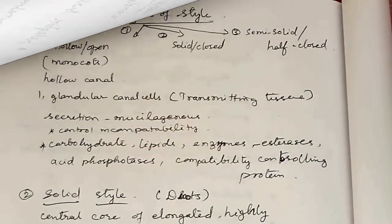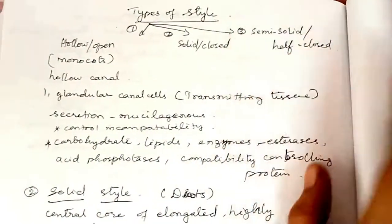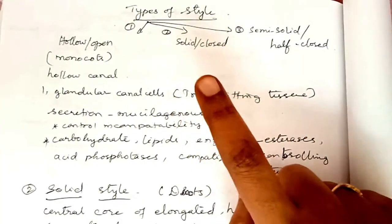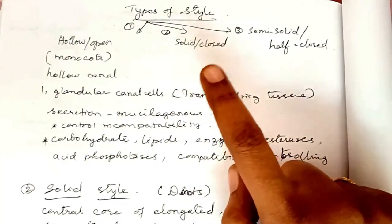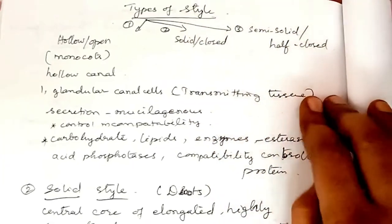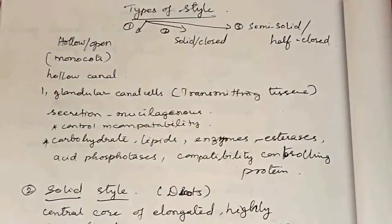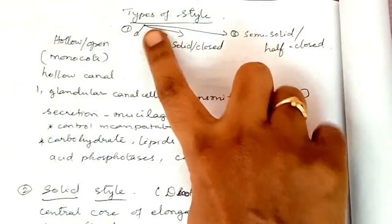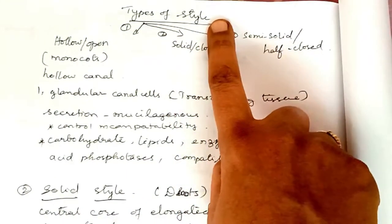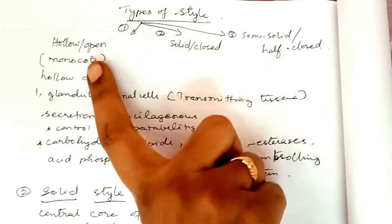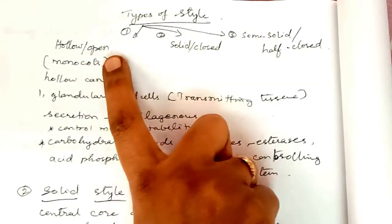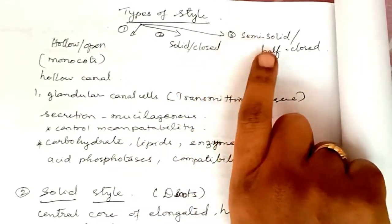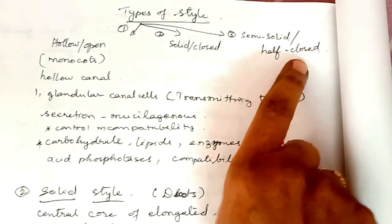After germination, the pollen tube enters the style from the stigma. The growth of the pollen tube in the style depends on the type of style. There are three types of style: hollow or open, solid or closed, and semi-solid or half-closed.